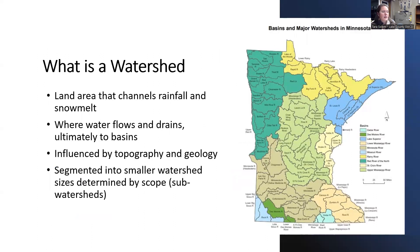What is a watershed? If you think of a drop of water that falls on any location within Minnesota, it explains where it would flow and where it would leave. A watershed is a land area that channels rainfall and snowmelt, where water flows, drains, and ultimately is discharged to basins. It's influenced by topography, which are physical features of an area, and geology, which is a physical structure and how the area was formed, containing soils and other qualities that describe an area.